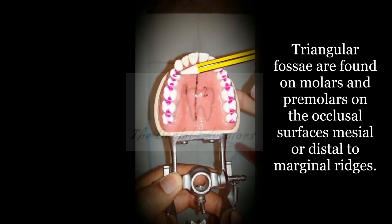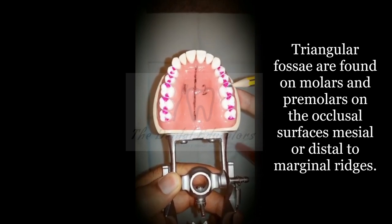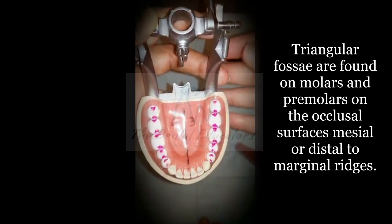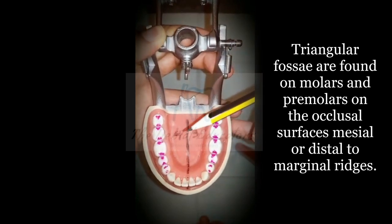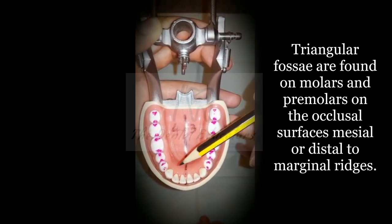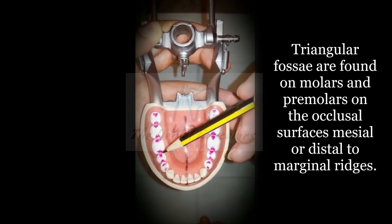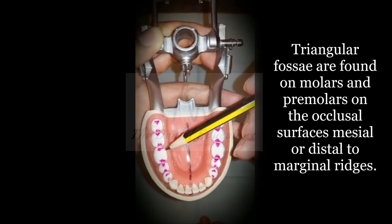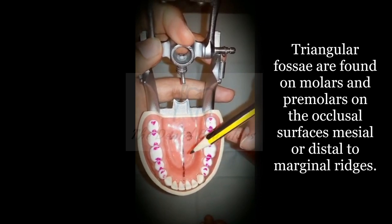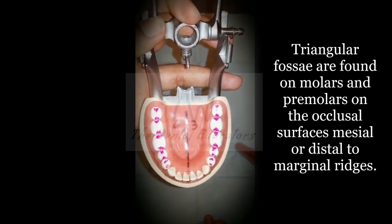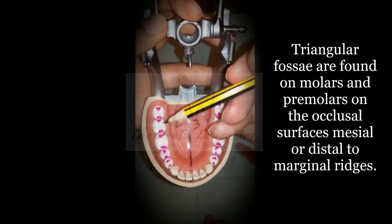The triangular fossa seen in the first quadrant are also present in the premolars and molars of the second, third, and fourth quadrants. In the mandibular arch, the mesial triangular fossa is closer to the midline and the distal triangular fossa is away from the midline. All teeth have mesial and distal triangular fossa named according to their location.